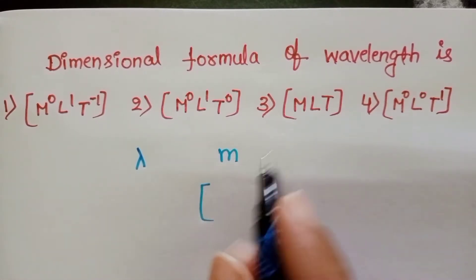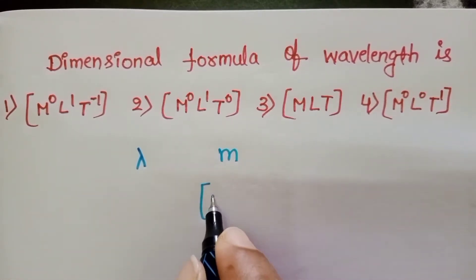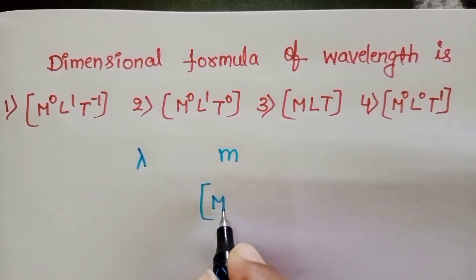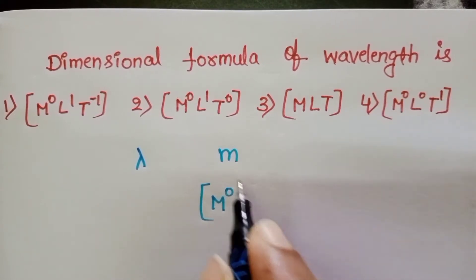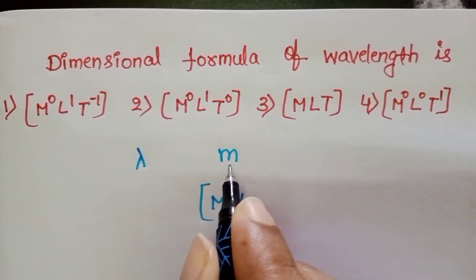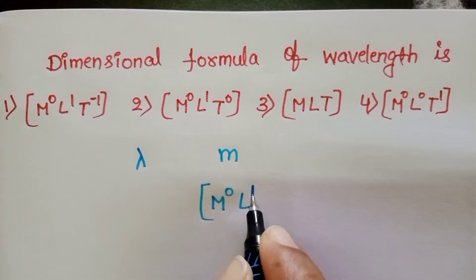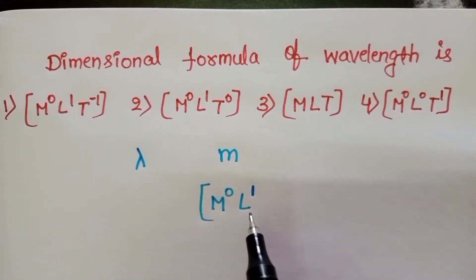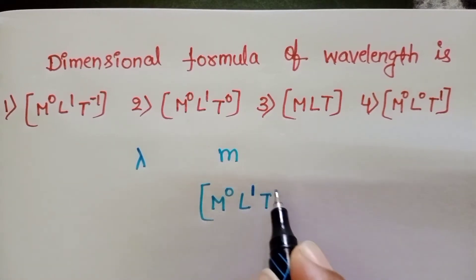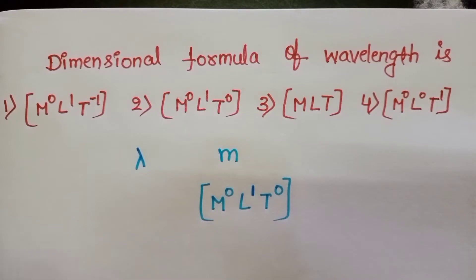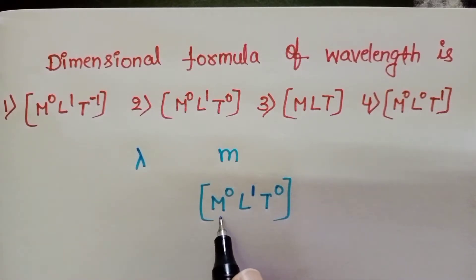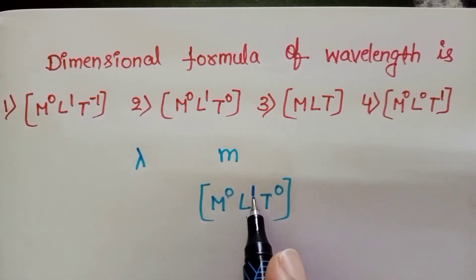So, the dimensional formula of wavelength is: there is no mass, so M power 0; length is only 1, so L power 1; and T power 0. Therefore, the dimensional formula of wavelength is M⁰L¹T⁰.